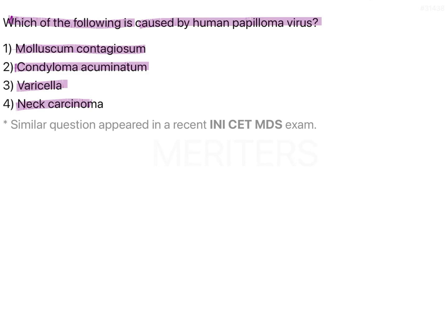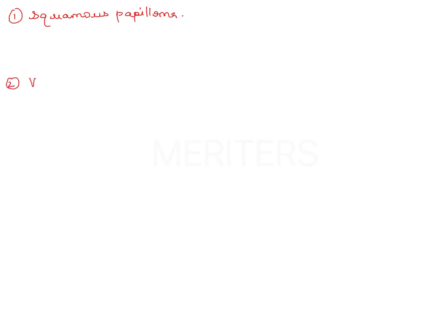The main four conditions caused by human papilloma virus that we need to know are: firstly, squamous papilloma; then verruca vulgaris; condyloma acuminatum; and focal epithelial hypoplasia.